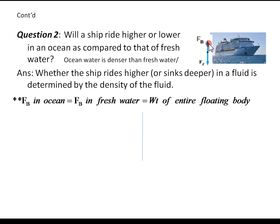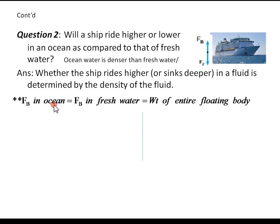The buoyant force — that is, the weight of the displaced fluid — must equal the weight of the entire floating body. So in any fluid, as long as this object floats, the weight of the ship must equal the buoyant force it experiences. Both buoyant forces in ocean and in freshwater must be equal to the weight of the entire floating body; so the object experiences the same buoyant force in ocean and in freshwater.